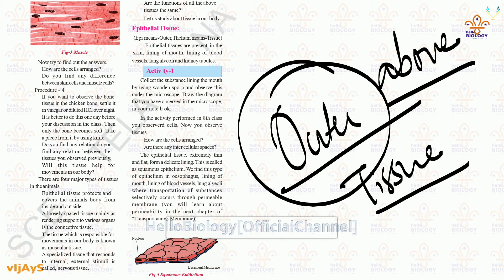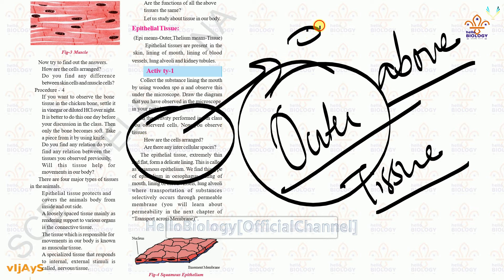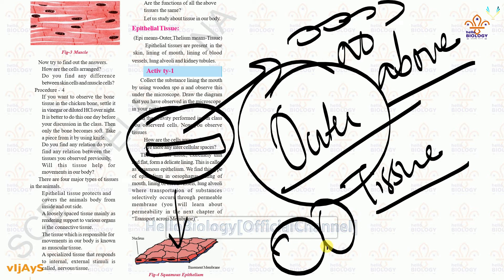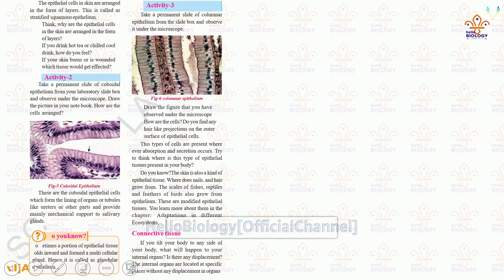Can you answer: how are cells arranged in squamous epithelium? They are in a linear pattern. Are there any intercellular spaces? No — cells are directly arranged one after another with no gaps. Next, we will discuss cuboidal epithelial tissue.